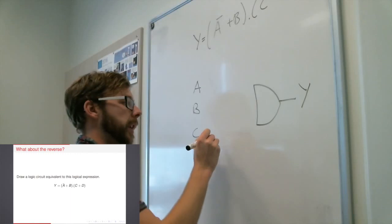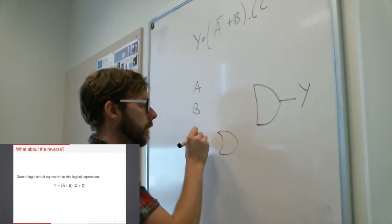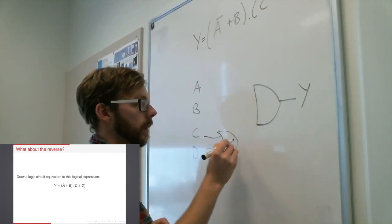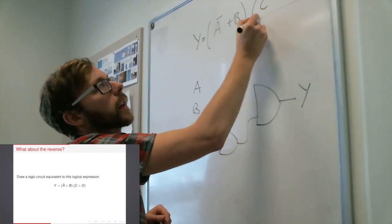The C and D one is pretty simple. I just need one OR gate down here. C goes in there. D goes in there. That goes in there. That ticks off this part of the expression.